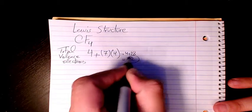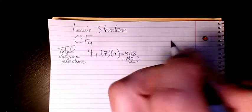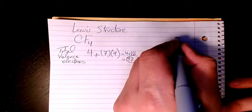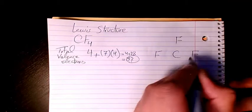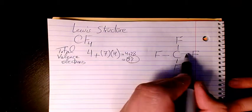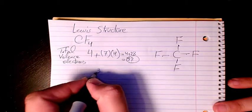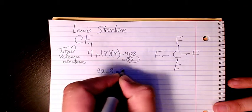So we have total valence electrons 32. Then I try to draw them here: single bond, single bond, single bond. 1, 2, 3, 4 bonds times 2 is 8, so 32 minus 8 is gonna be 24.